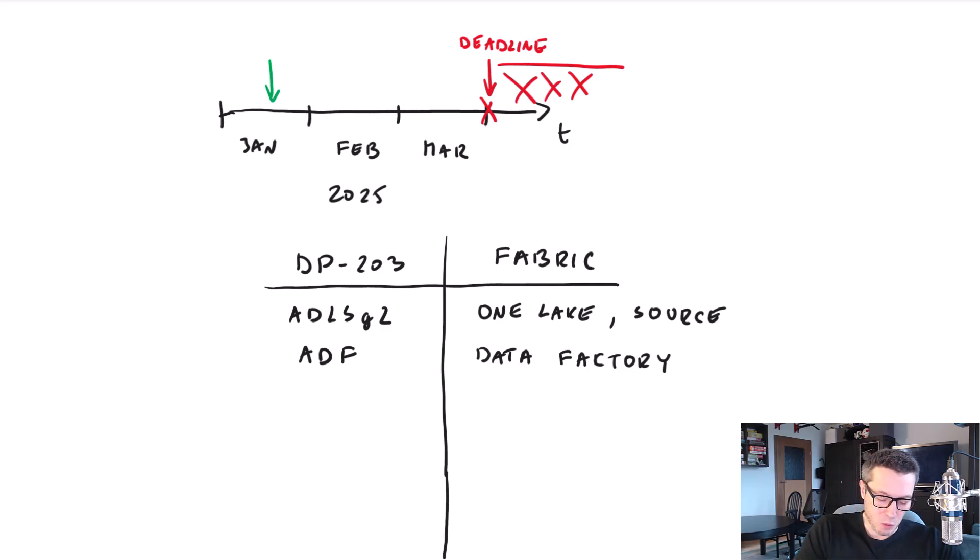Then we have Synapse Analytics in DP-203, and it was a big part of the exam. In Fabric, it is still relevant. And actually, you will find this Synapse name in many parts inside Fabric. For example, in Synapse we had those various pools, like Spark pools to work with Spark and with Notebooks. And it is still valid in Fabric. It is just rebranded to Data Engineering.